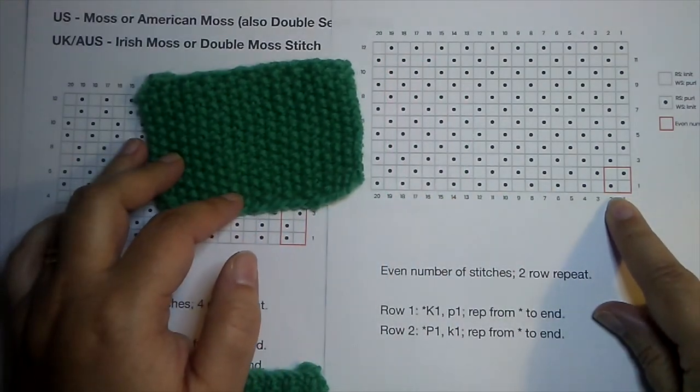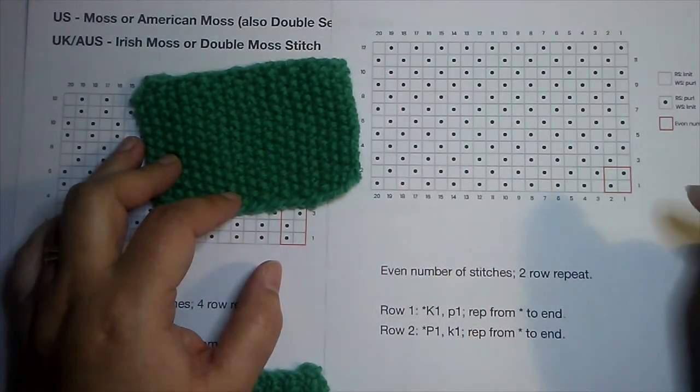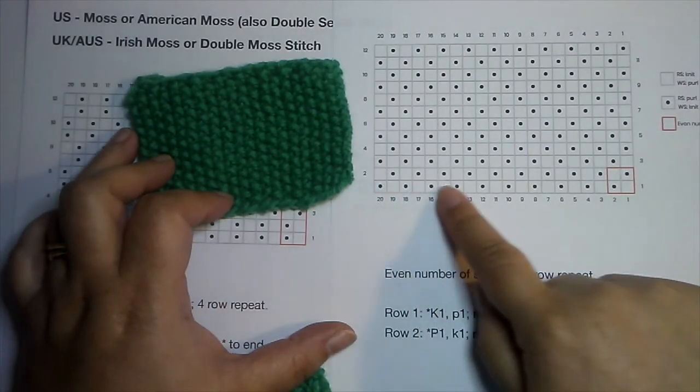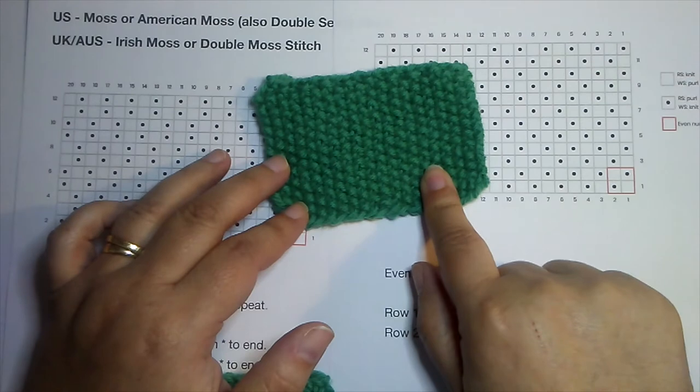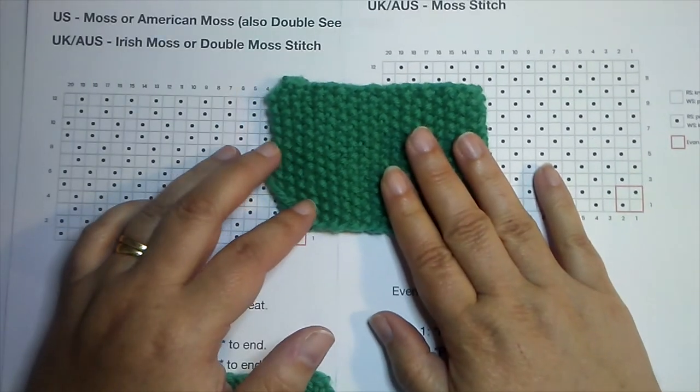So we knit one, purl one on our first row, and then we break that pattern. On the next row, we would purl one, knit one. And we get this seed stitch, or moss stitch.